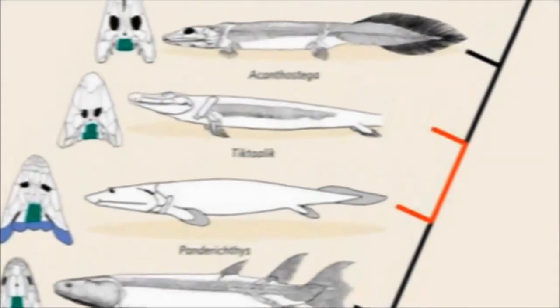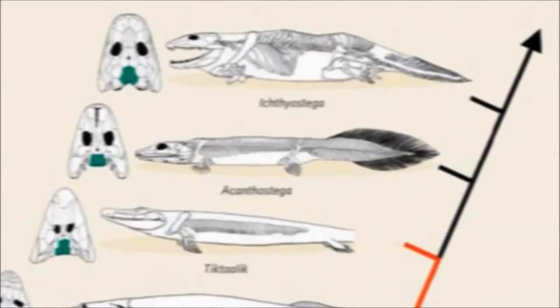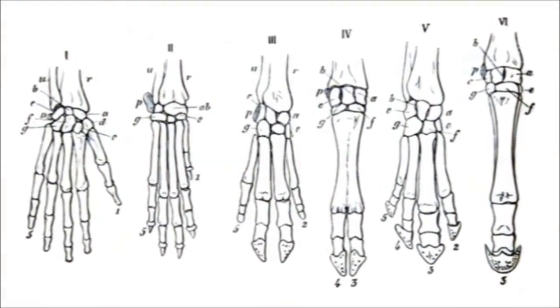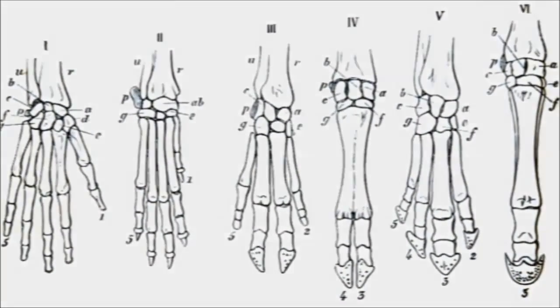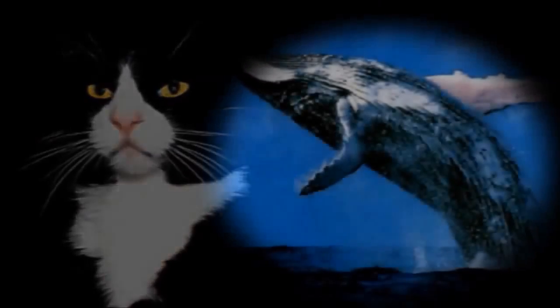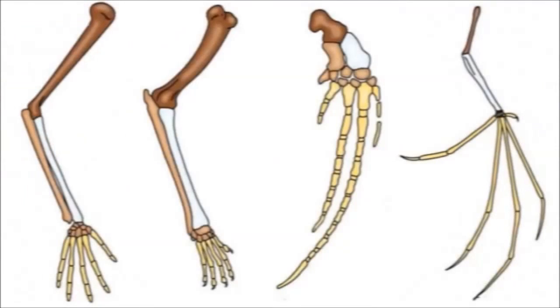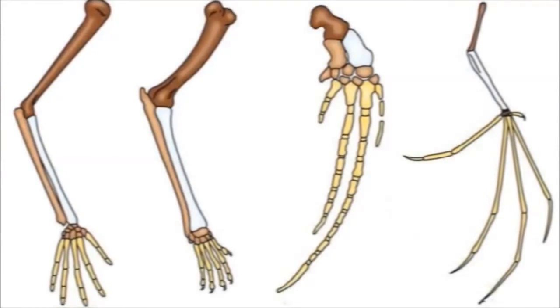A common theme within evolutionary biology is descent with modification, which is evidenced by observing anatomical similarities between species grouped in related taxonomic categories. For example, many mammals such as humans, cats, whales, and bats have closely related skeletal elements that make up their forelimbs, although these appendages have very different functions.